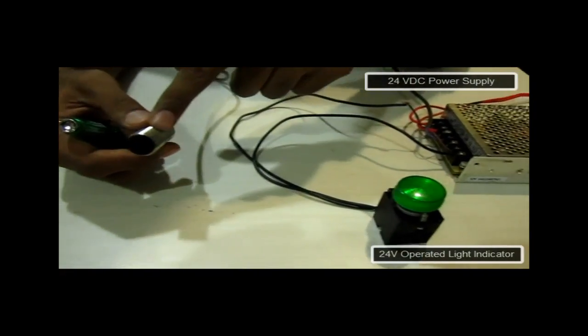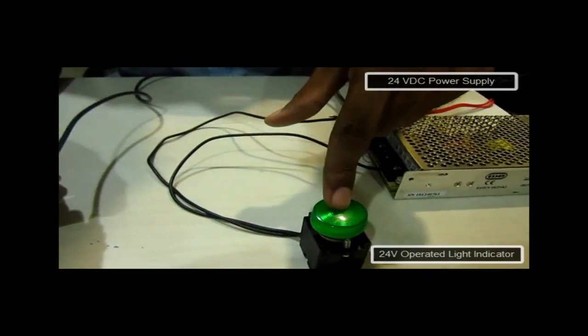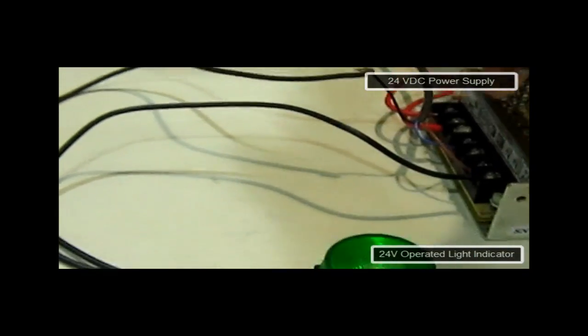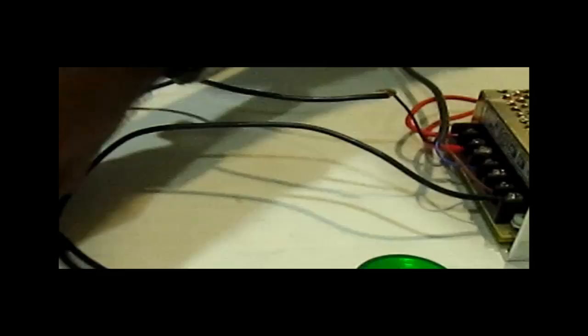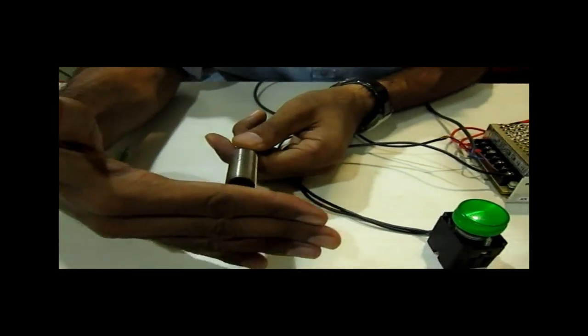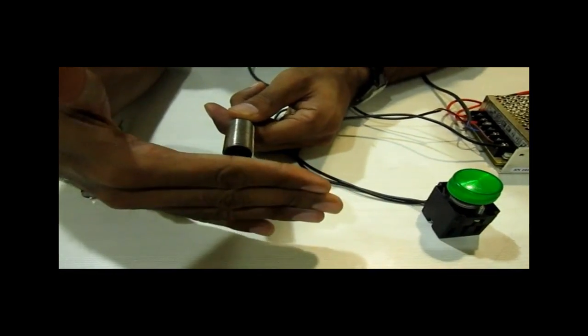I have connected the 24 volt output from this sensor to this indicator and 0 volt is provided from the back end. When I put some non-metal in front of this sensor, nothing is detected and no signal is coming.